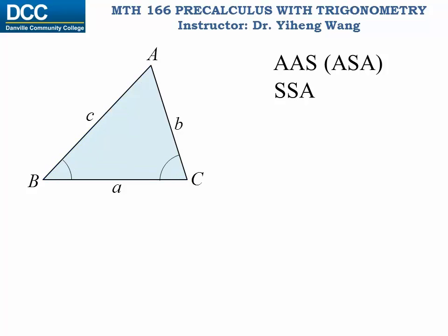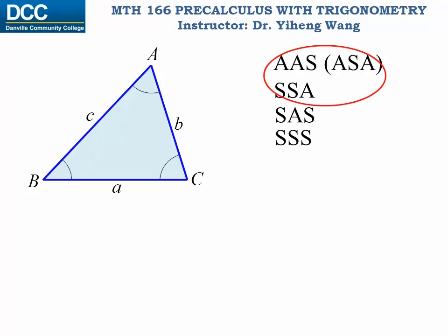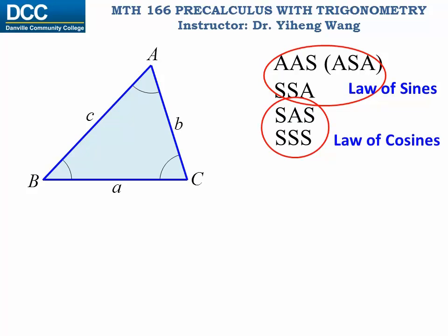The third situation is when the three parameters given are side, angle, and side — known as SAS. And lastly, the fourth situation is when we are given all three sides of the triangle — known as SSS. For the first two situations, we can solve the triangle using the law of sines. And for the last two situations, we can solve the triangle using the law of cosines.